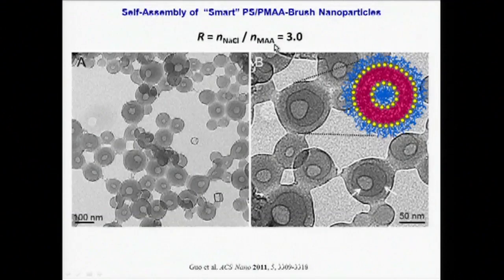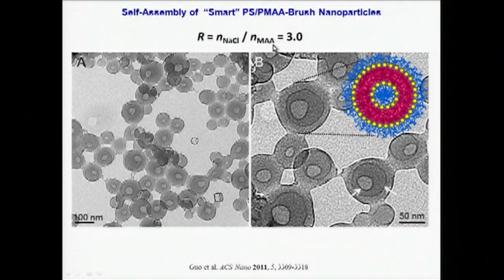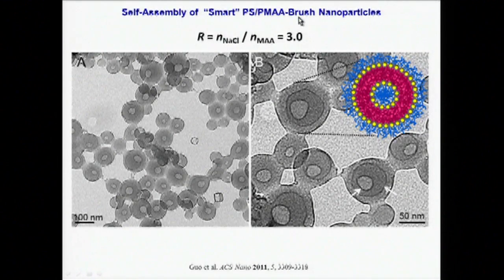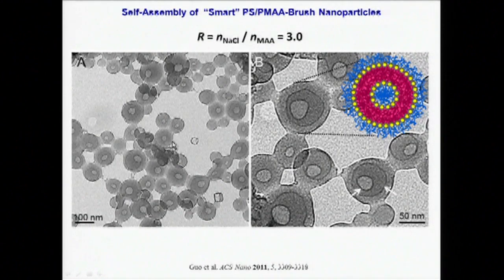If we further screen repulsive interactions during self-assembly by adding a larger quantity of salt relative to the number of charged groups in the mixed brush, we get a completely different quantum dot assembly yet again.